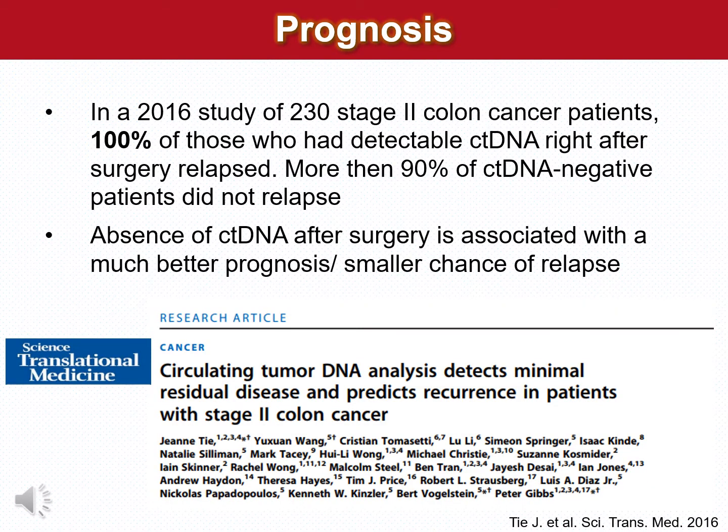In 2016, a study of 230 stage 2 colon cancer patients showed that 100% of those who had detectable circulating tumor DNA right after surgery relapsed later. On the contrary, more than 90% of patients whose circulating tumor DNA disappeared and became negative did not relapse. This shows that the presence of circulating tumor DNA after surgery is a bad prognostic indicator, and these data have been confirmed in many studies.